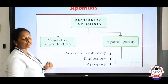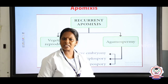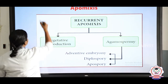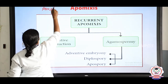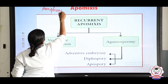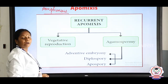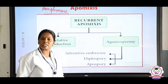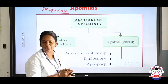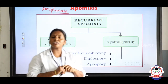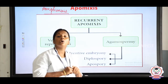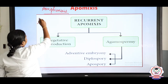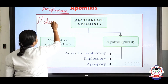The next topic is apomixis. Without fertilization we call the process apomixis; with fertilization it is called amphimixis. In apomixis, no meiosis division takes place and syngamy — fusion of gametes — does not occur. Apomixis was first observed by Winkler, and Professor Maheshwari classified apomixis into types.